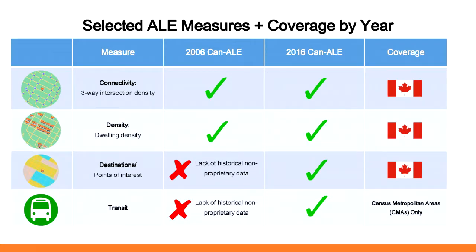For the 2006 dataset, only non-proprietary data was available to derive three-way intersection density and dwelling density. For the 2016 dataset, we have pan-Canadian coverage of three-way intersection density, dwelling density, and points of interest or destination density. We also have coverage for about 65% of Canada — all census metropolitan areas with 100,000 people or more — of transit stops, including any bus, rail, or other transit stop in that area.